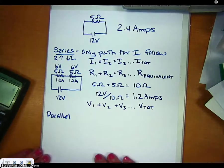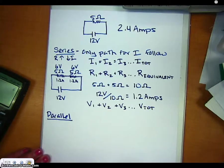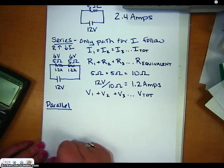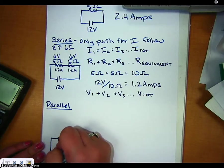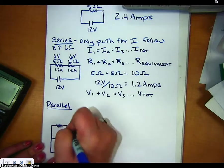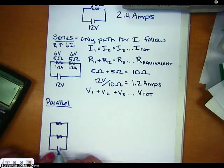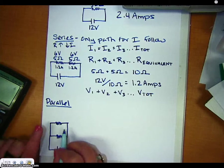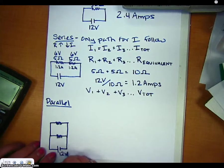All right, let's look at what happens then when I put something in parallel. So in this case, let's take those 5 ohm resistors, and I'm going to put them parallel to one another. When they're parallel to one another, there's more than one path for the current to follow, but they have equal access to the battery, so they have the same voltage.